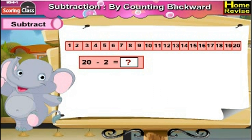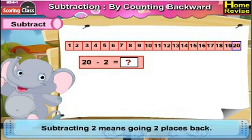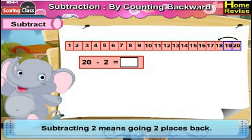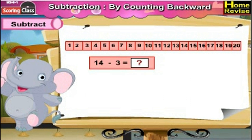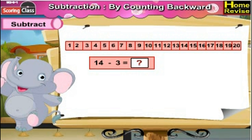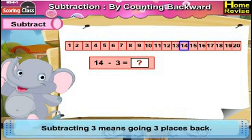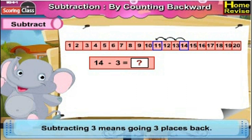20 minus 2: can you tell me how we can subtract 2 from 20? Subtracting 2 means going two places back, so 20 minus 2 would be 18. 14 minus 3: we need to subtract 3 from 14. Subtracting 3 means going three places back, so 14 minus 3 is 11.